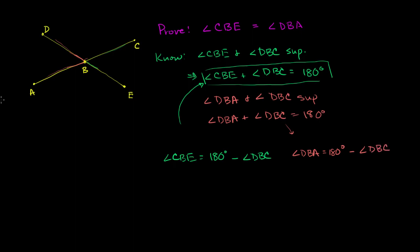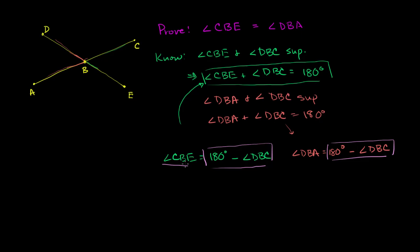Clearly, angle CBE is equal to 180 degrees minus angle DBC, and angle DBA is equal to 180 degrees minus angle DBC. So they are both equal to the same thing, which means angle CBE is equal to angle DBA — which is what we wanted to get.